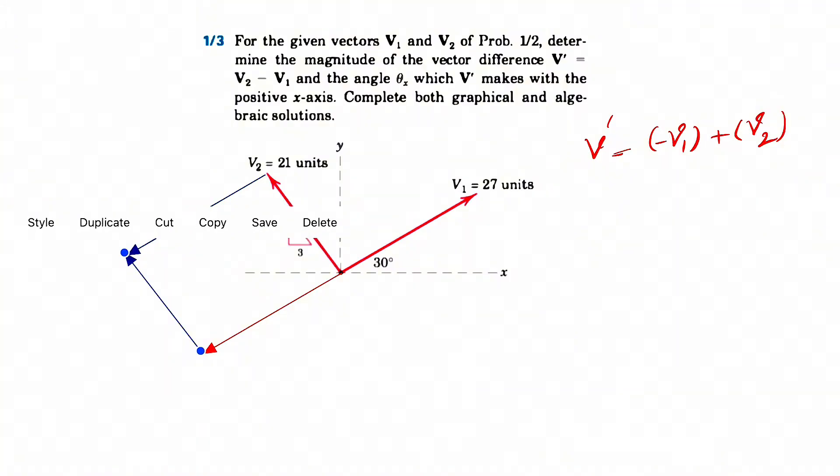So this is going to be our V2. And for finding the sum of these two or the resultant, the vector that connects beginning to here is going to be what we showed V prime.